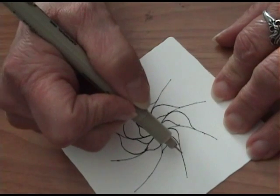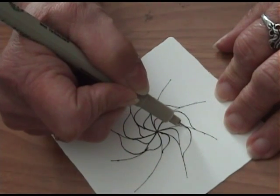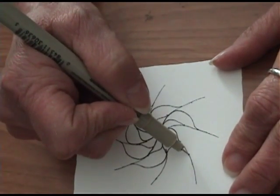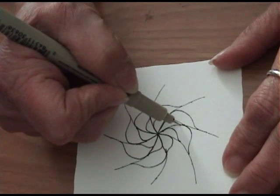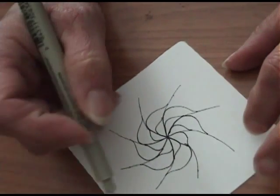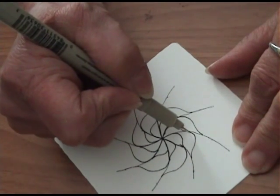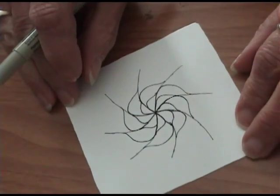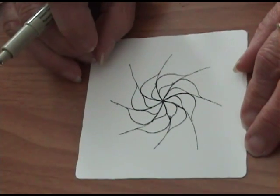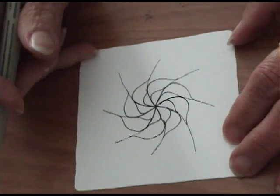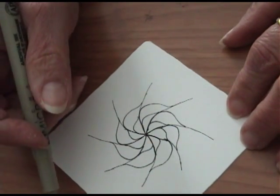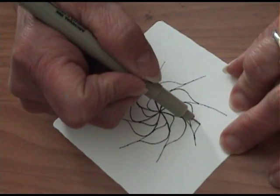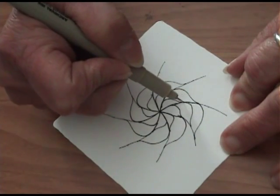You'll note these just keep getting bigger. Each row gets a little bit larger. All right, the last row you just find the last dot on the outside circle of holes that you made and start there and again curve out and around.